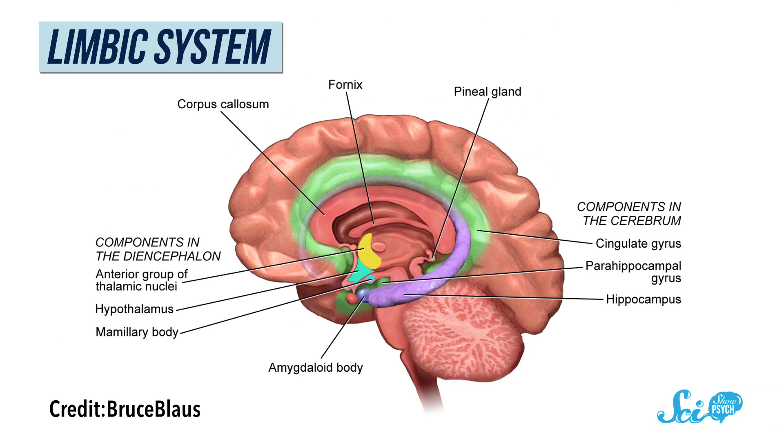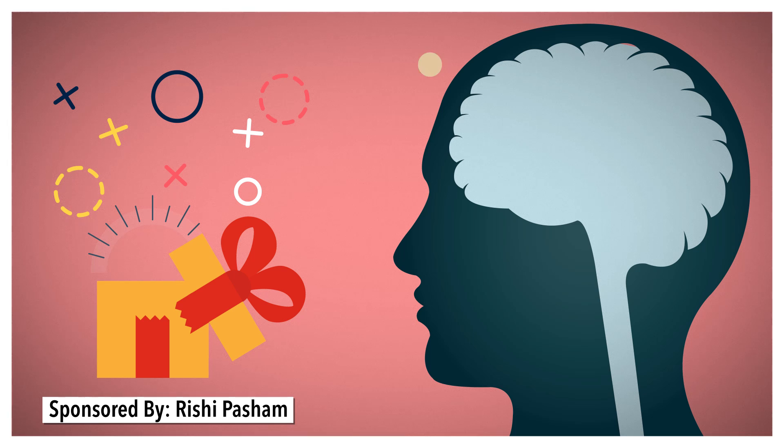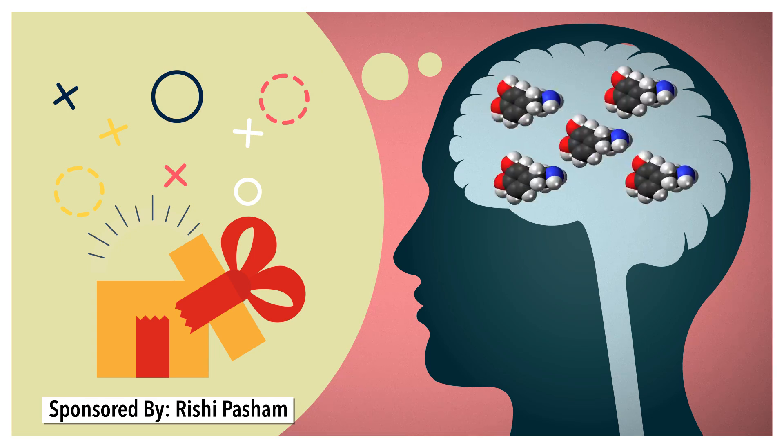Sensation-seeking seems to have a lot to do with the limbic system, which is a pretty old part of your brain, evolutionarily speaking. Every mammal has one, and they look kind of similar. It's involved in a lot of the basic stuff, like your emotions, stress response, and long-term memory. Whenever you get some kind of reward, or even just expect it, your limbic system sends out a bunch of dopamine, one of the brain's main feel-good neurotransmitters.